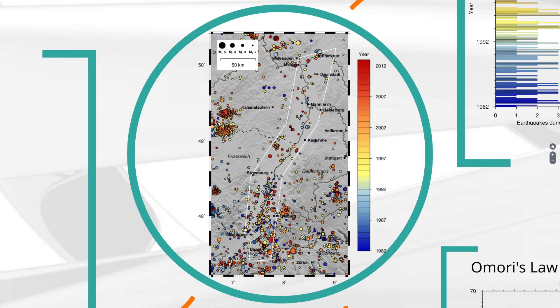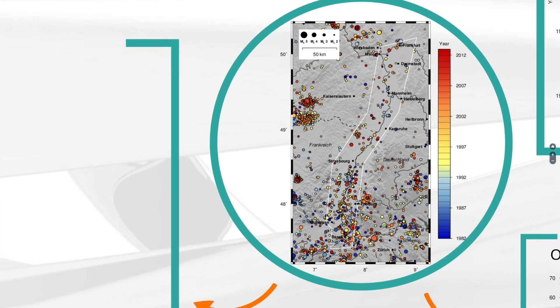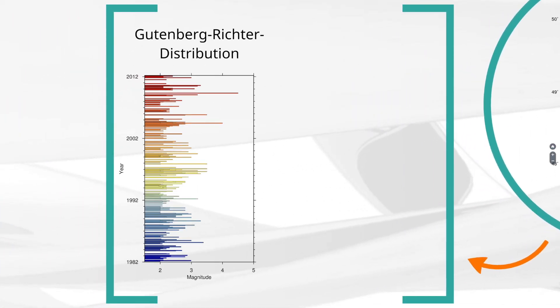Qualitatively, this is already apparent on the map. First, let me show the magnitude distribution over time. We see that only two earthquakes with a magnitude equal or greater than 4 have occurred since 1982. By the way, the mean value is 2.35. We will need it in the next step.